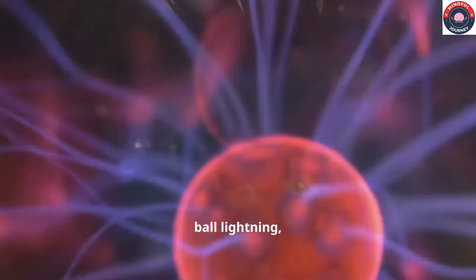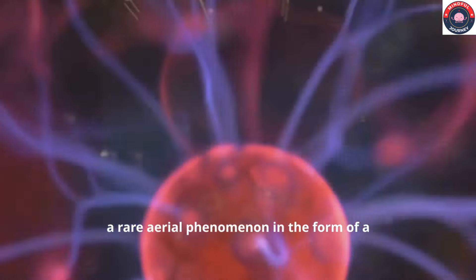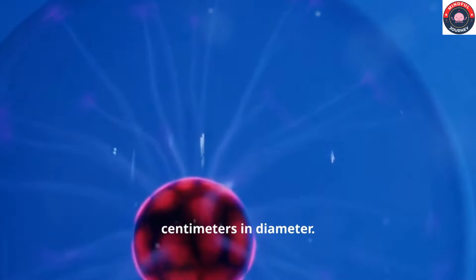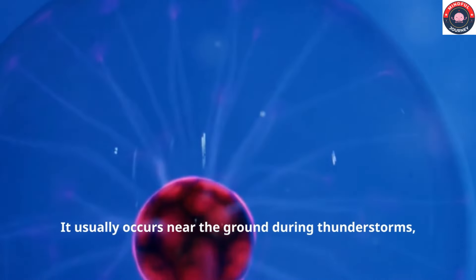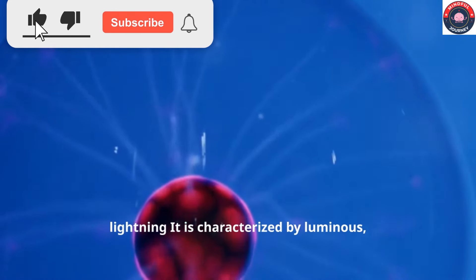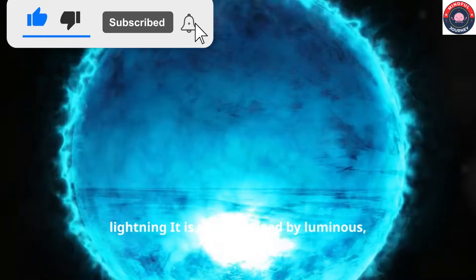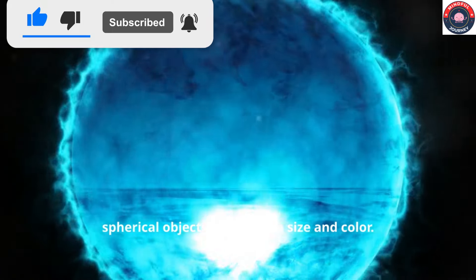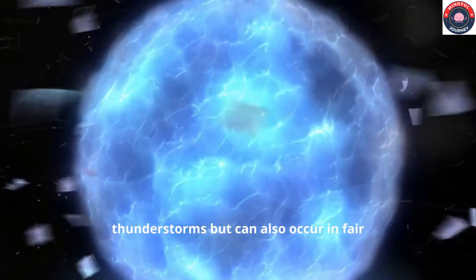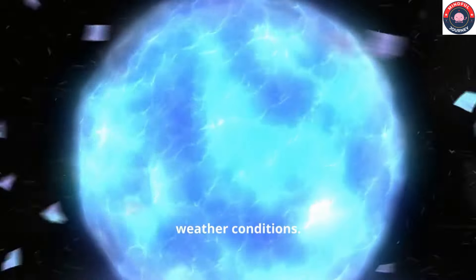Ball lightning, a rare aerial phenomenon in the form of a luminous sphere that is generally several centimeters in diameter. It usually occurs near the ground during thunderstorms, in close association with cloud-to-ground lightning. It is characterized by luminous spherical objects that vary in size and color. They typically appear during thunderstorms, but can also occur in fair weather conditions.